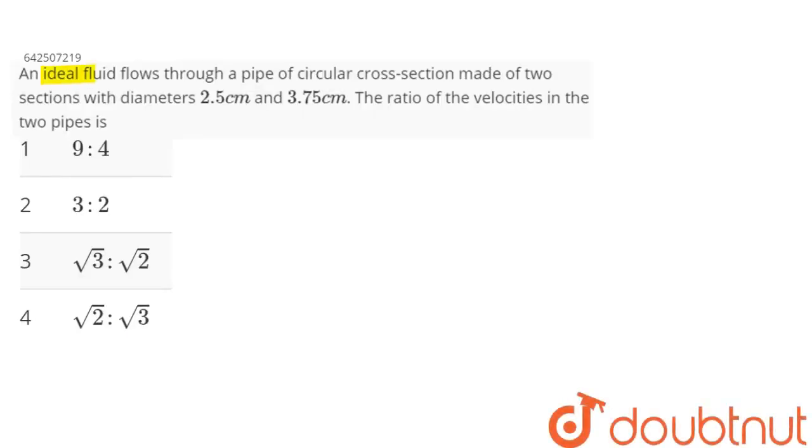Question is: An ideal fluid flows through a pipe of circular cross-section made of two sections with diameters 2.5 cm and 3.75 cm. The ratio of the velocities in the two pipes is...